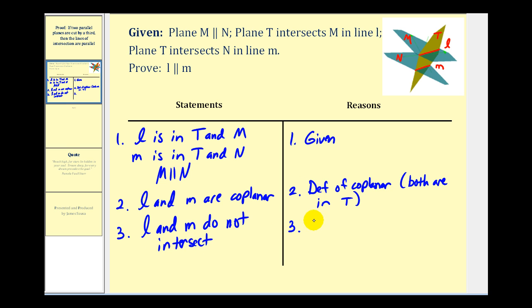And the reason would be by definition of parallel planes, or because parallel planes do not intersect. Notice now we've stated that the two lines are coplanar and they don't intersect, and therefore the two lines are parallel. And this is by definition of parallel lines.